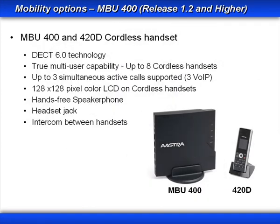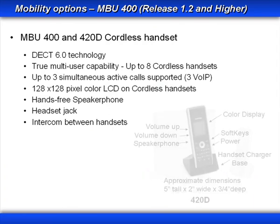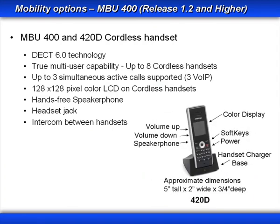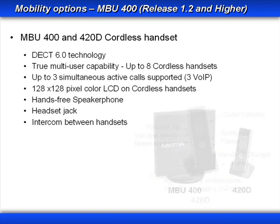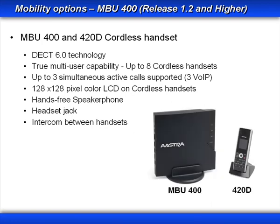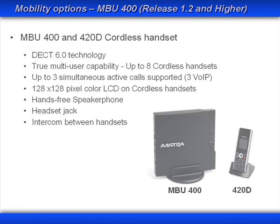The MBU-400 and 420D cordless handset adds a wireless mobility option to the Astralink Pro 160. They use DECT 6.0 technology for virtually interference-free wireless performance and added security. The MBU-400 supports up to eight handsets and supports up to three simultaneous Voice over IP calls.